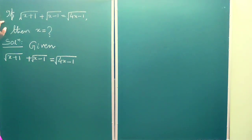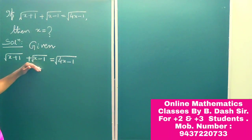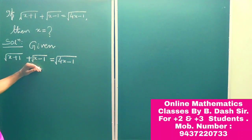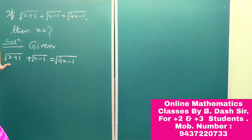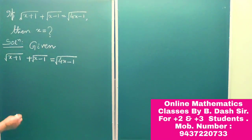The question is: the whole root of (x plus 1) plus the whole root of (x minus 1) is equal to the whole root of (4x minus 1). We have to simplify this equation and find the value of x.